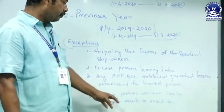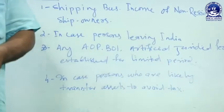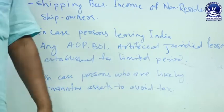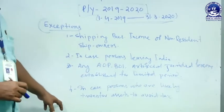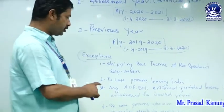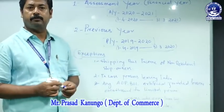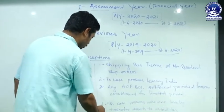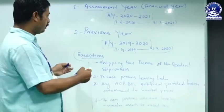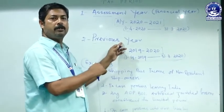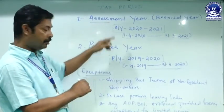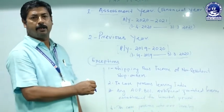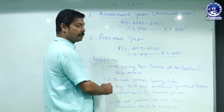The fourth case involves persons who are likely to transfer assets to avoid tax. If the income tax officer finds that a person is likely to transfer assets to any other person solely for the purpose of avoiding tax, then in the year in which the person transfers, sells, or disposes of the asset, they are liable to pay the tax in that same year. So these are the exceptional cases — in general, income derived in the previous year is taxed in the assessment year, but in exceptional cases, the income is taxed in the same year.